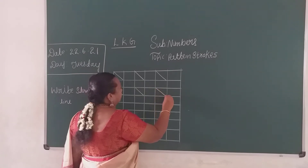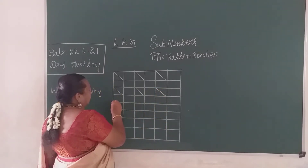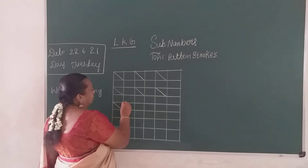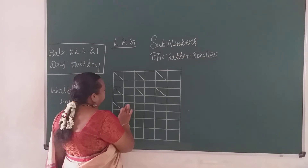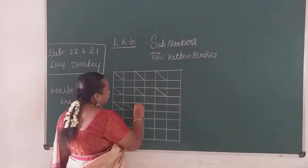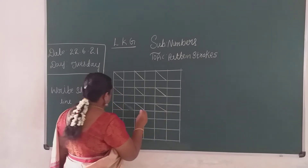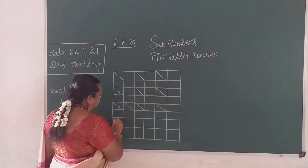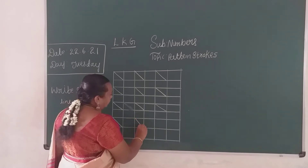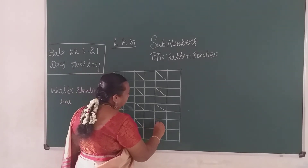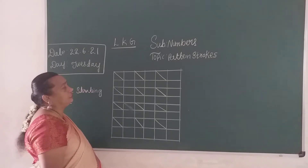What is it called? Right slanting line. Touch this line to this line. Right slanting line. What is it children? Right slanting line. Very easy to write children.